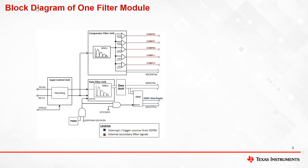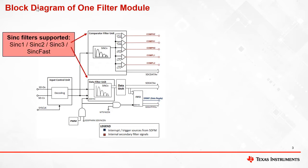Let's take a closer look at each sub-module inside a filter channel. Type 2 SDFM supports mode 0 to provide a bitstream to each filter channel. Each filter channel has a comparator filter unit and a data filter unit. Both filter units are based on sinc filters and support Sinc1, Sinc2, Sinc3, and Sinc Fast.